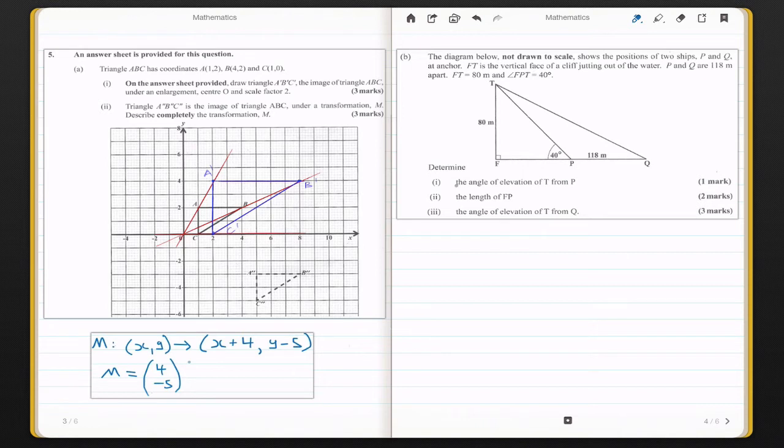On inspection, I will say this question is a trigonometry question simply because part one is asking for the angle of elevation of T from P. So imagine you were standing at P and looking up at T. Our angle of elevation in this case should be nothing more than 40 degrees. That is part one.